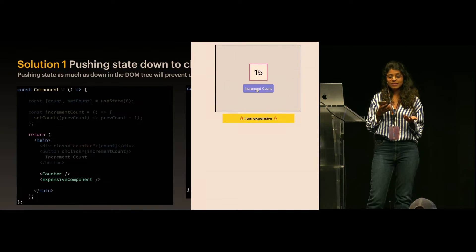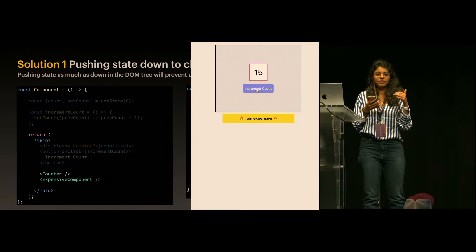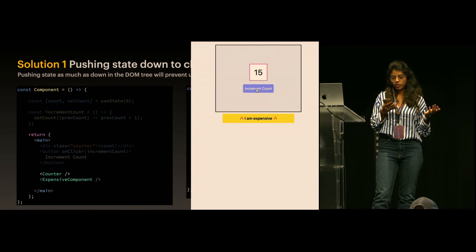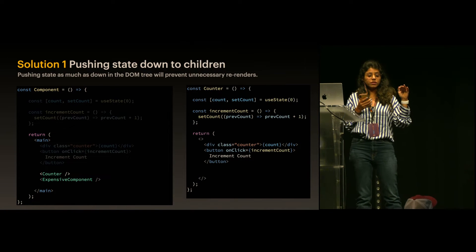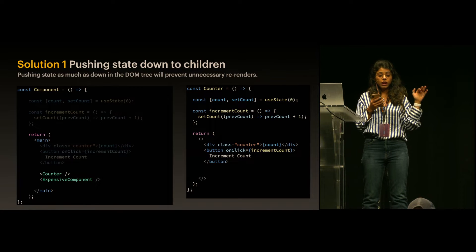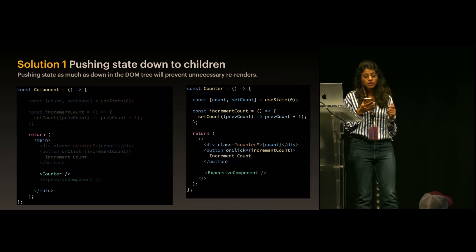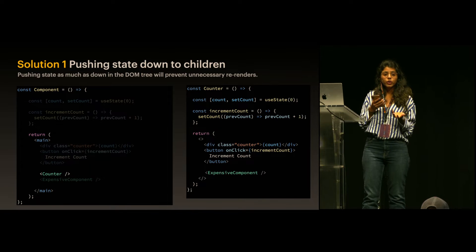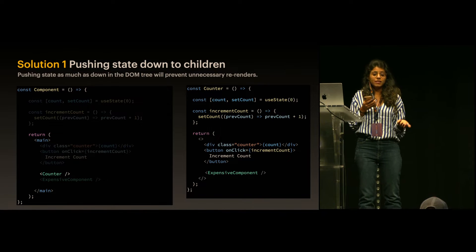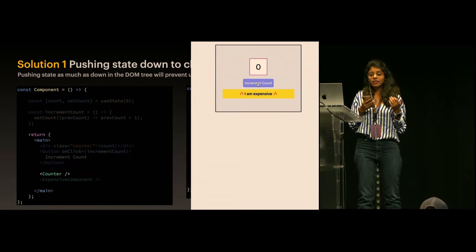However, let's say your product owner says the expensive component should be together with the counter component and you move it back. Now we are in the same situation again — when we click the button, the component re-renders and so does the expensive component. Running this again shows it's slow again.